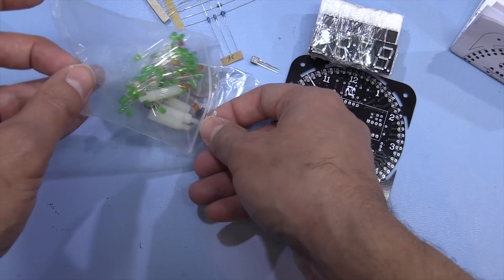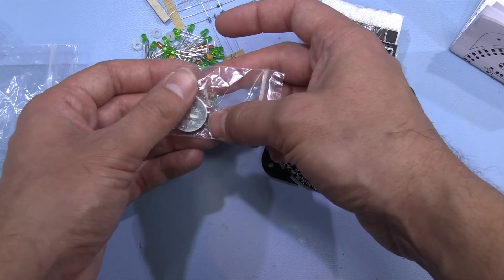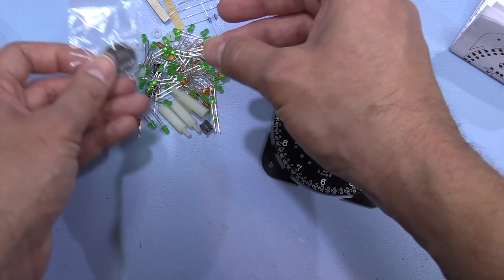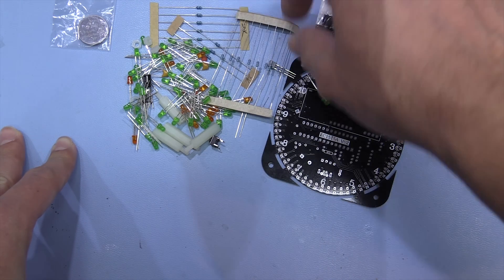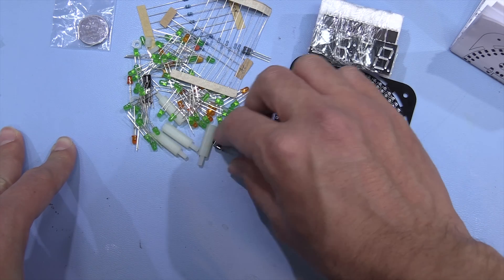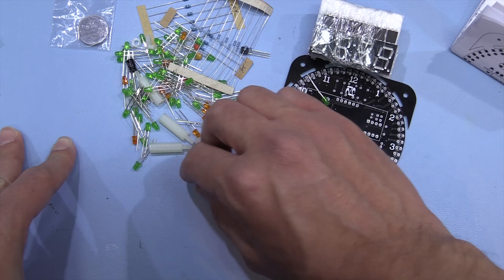And then we've got the rest of the components here. So the LEDs, they do actually provide a CR2032 for keeping the time when it's not powered up. A bunch of LEDs, some resistors, a transistor here and a switch and some mounting posts.